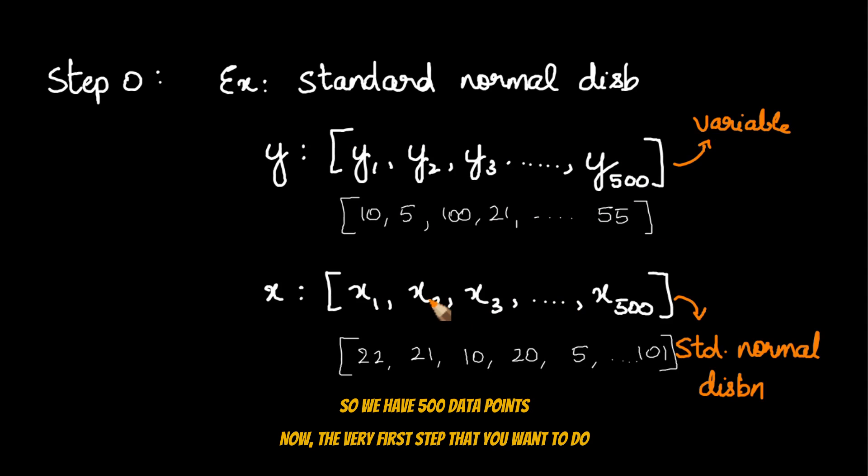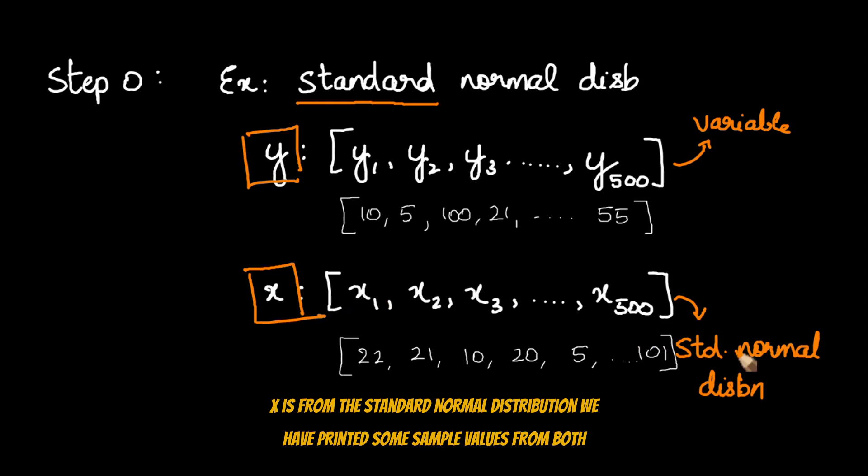Now, the very first step that you want to do is, we are going to draw an equally sized sample from a standard normal distribution. Now it is not necessary or mandatory to keep it as a standard normal distribution. This is the norm. However, it can be any normal distribution. So you have the data, which is the y variable, and the x is from the standard normal distribution. We have printed some sample values from both y and x.